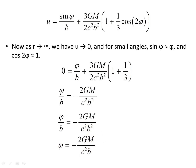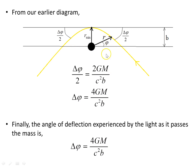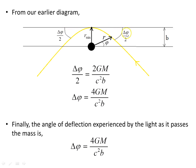Returning to our diagram: an incoming photon is deflected by the Schwarzschild mass due to spacetime curvature. We want to find the total deflection Δφ from the original path. By symmetry on both sides of the mass, we can find Δφ/2 on one side and double it to get the total deflection of the light wave.